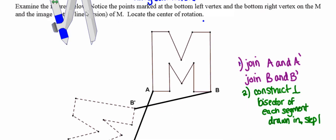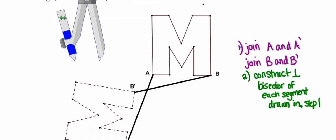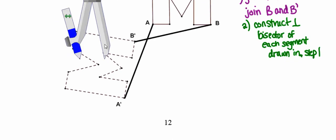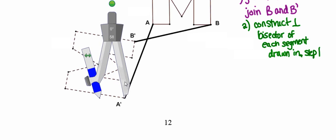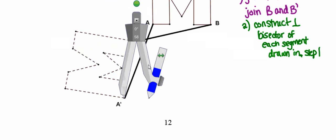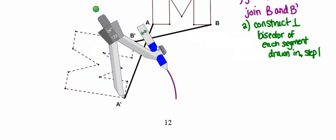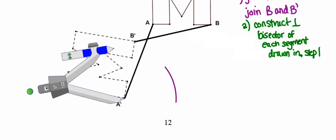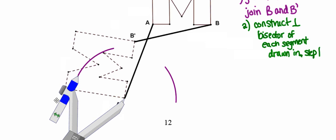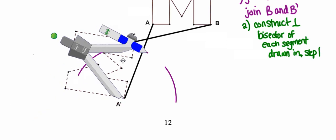So I'm going to drag my compass and all I'm going to do is I'm going to construct the perpendicular bisector of A, A prime to start with. And then I'm going to drag my compass.